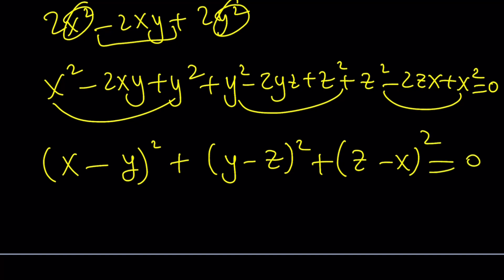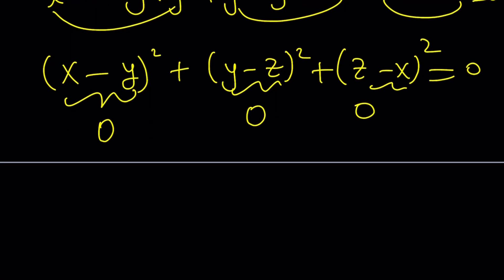If you're dealing with real numbers, this sum is 0 only if each number is equal to 0. Right? Great. Now set each of these equal to 0. You're going to get x equals y equals z. And what does that mean? It just means that they're all equal, which implies that x is equal to y is equal to z, and they're all equal to 1. All the solutions are real. That's it. Case closed.